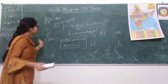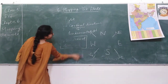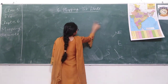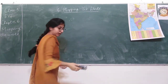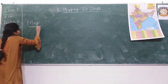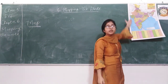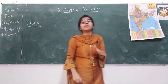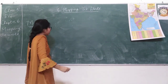So that is all about directions — cardinal and intercardinal. Now we are coming to the major part of our chapter, that is the map. What is a map? Students, how do we define maps? If somebody asks you, how will you define a map? What will you say?